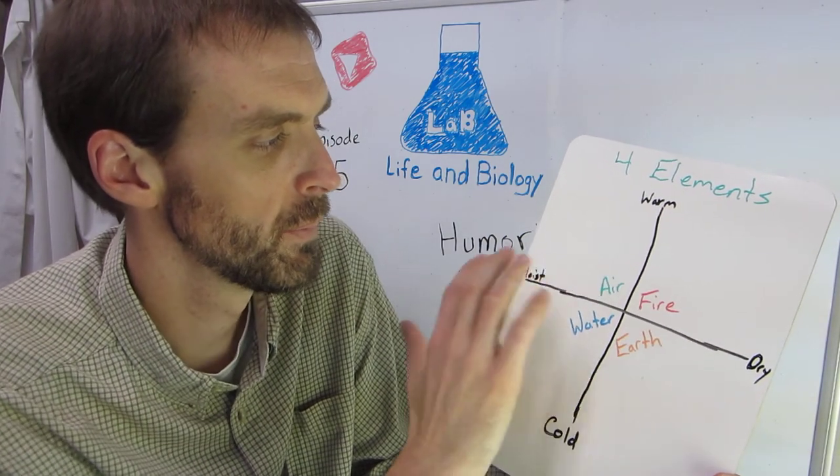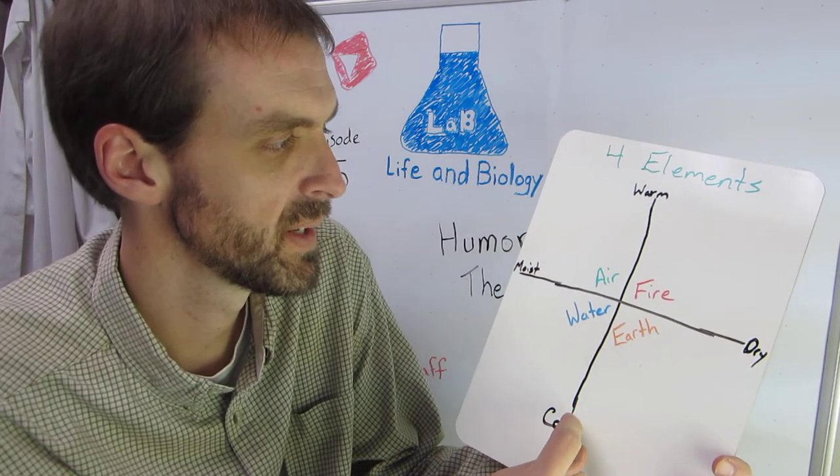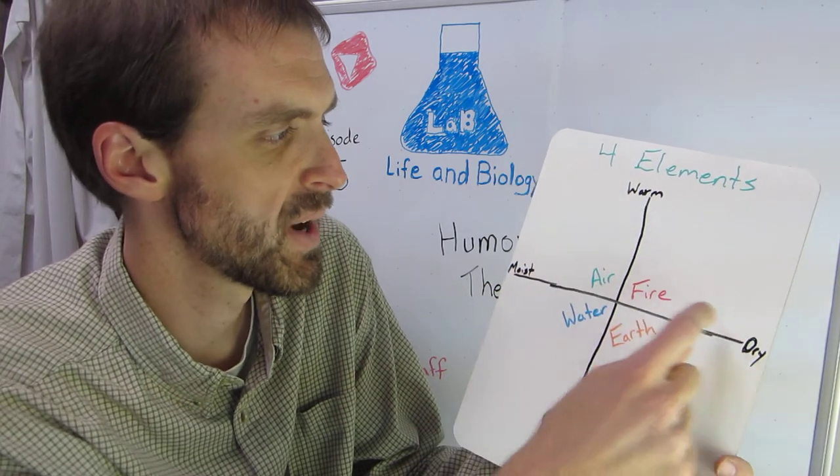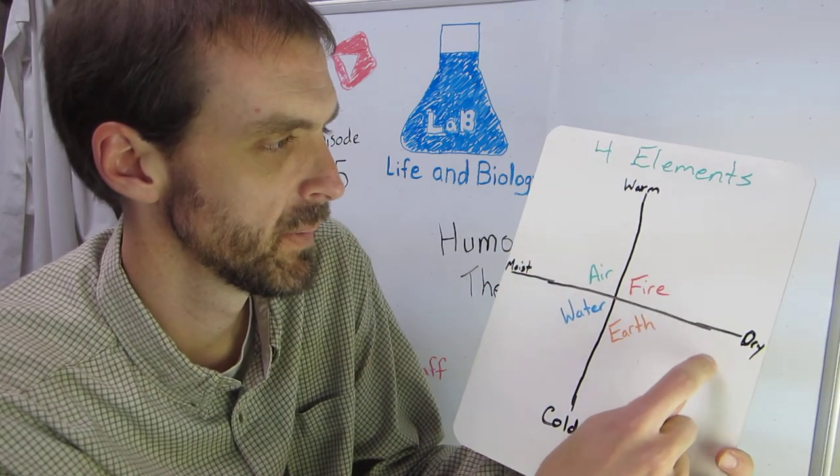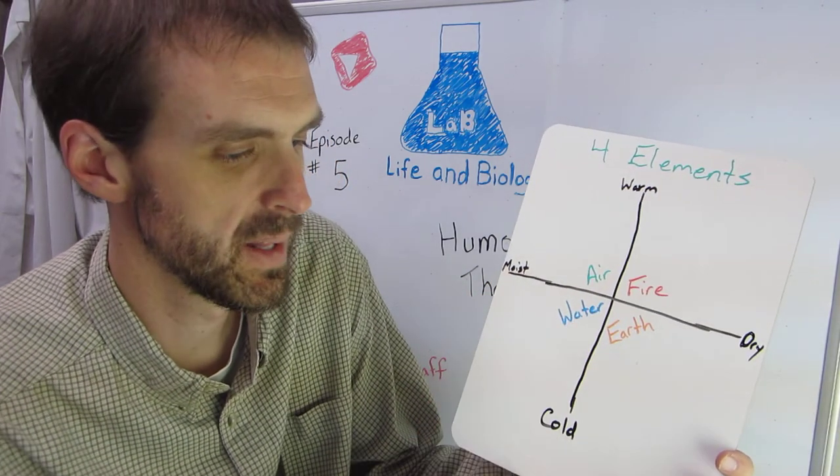They can be put on a graph with moist and dry in this direction, warm and cold in this direction. So moist and warm is air, warm and dry is fire, dry and cold is earth, cold and moist is water. So those are the four elements.